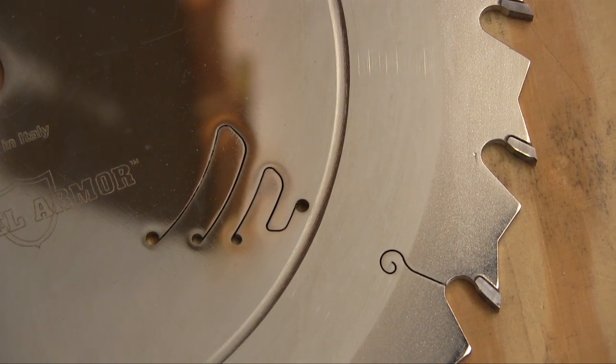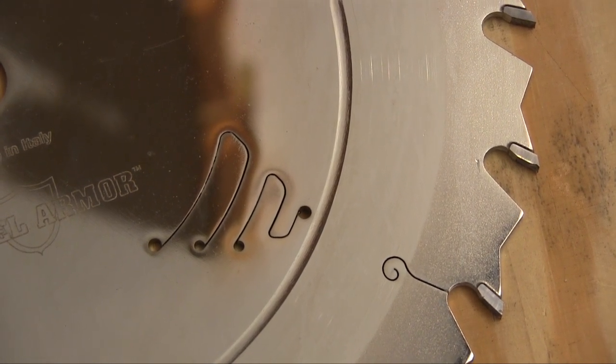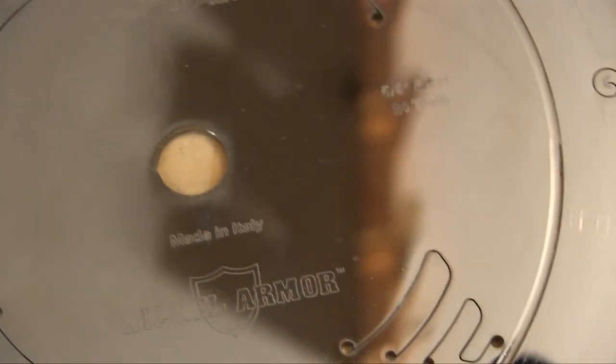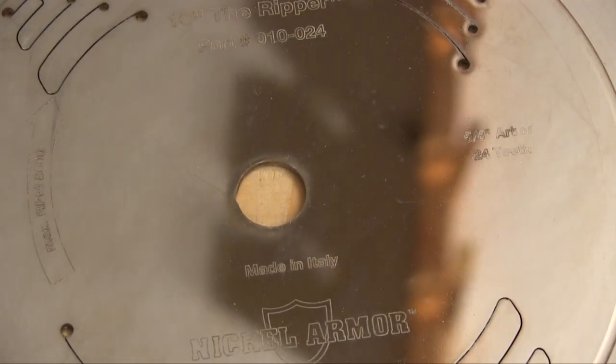Here you can also see the tensioning ring that Infinity uses to help keep these blades stable. Even the arbor hole is very precisely sized so this blade doesn't hang out of alignment.